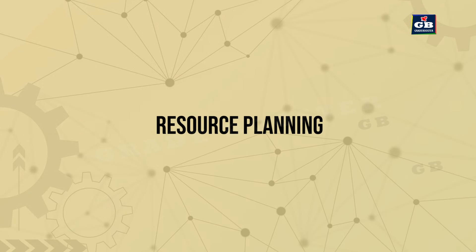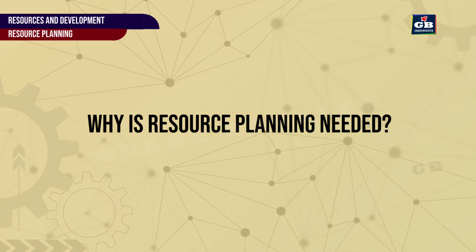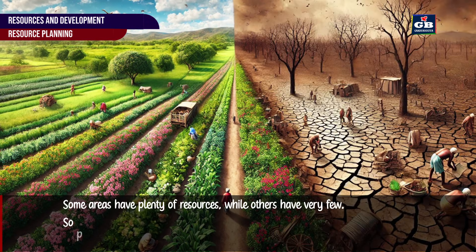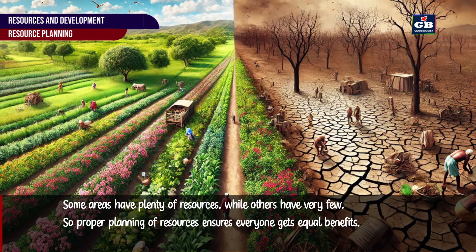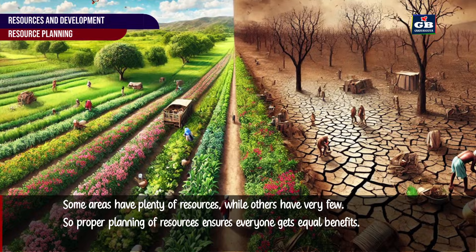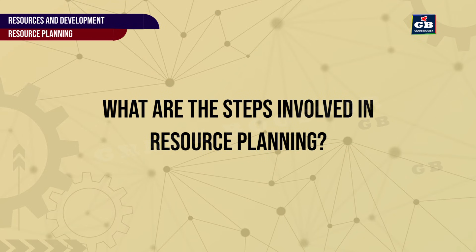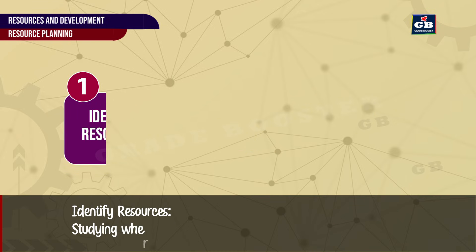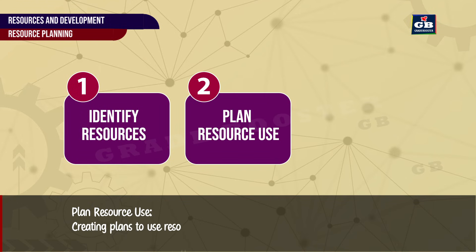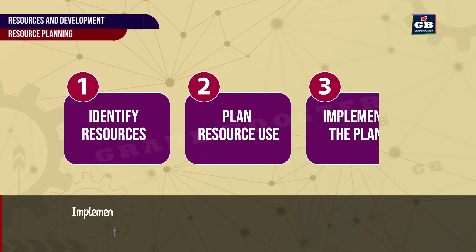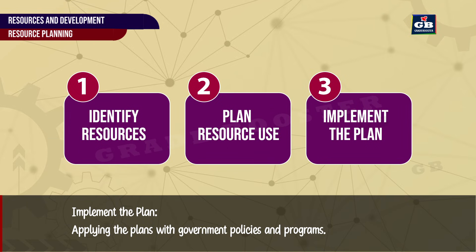Why is resource planning needed? Some areas have plenty of resources while others have very few, so proper planning ensures everyone gets equal benefits. The steps involved in resource planning are: 1. Identify resources — studying where and what resources are available. 2. Plan resource use — creating plans to use resources efficiently. 3. Implement the plan — applying the plans with government policies and programs.